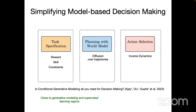Instead of a policy that infers actions at every state, once we have a trajectory, we directly use an inverse dynamics model, which takes adjacent states and predicts actions from them. To optimize for different rewards, skills, and constraints, we directly condition the generative model on each of these specifications — making this essentially a complete generative modeling problem. This formulation also makes it easy to combine different behaviors or models together.